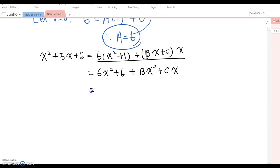Now just to rewrite using descending order and combine the right term, you can write 6 plus b x squared plus c times x plus 6. That must equal to x squared plus 5x plus 6.